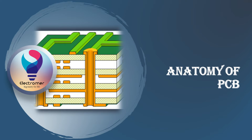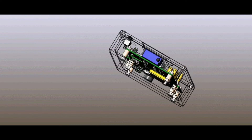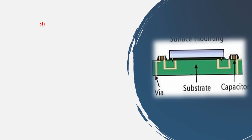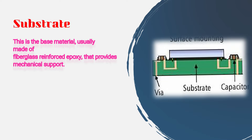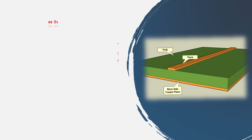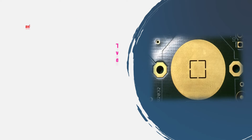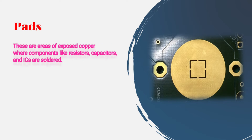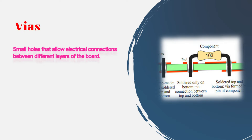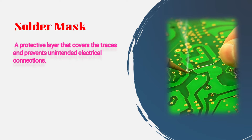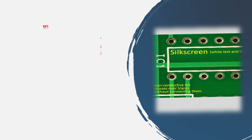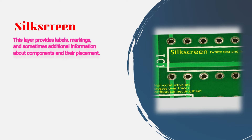Now let's break down the key components of a typical PCB. Substrate: the base material, usually made of fiberglass-reinforced epoxy, that provides mechanical support. Copper traces: conductive pathways on the surface of the board that connect different components. Pads: areas of exposed copper where components like resistors, capacitors, and ICs are soldered. Vias: small holes that allow electrical connections between different layers of the board. Solder mask: a protective layer that covers the traces and prevents unintended electrical connections. Silk screen: this layer provides labels, markings, and sometimes additional information about components and their placement.